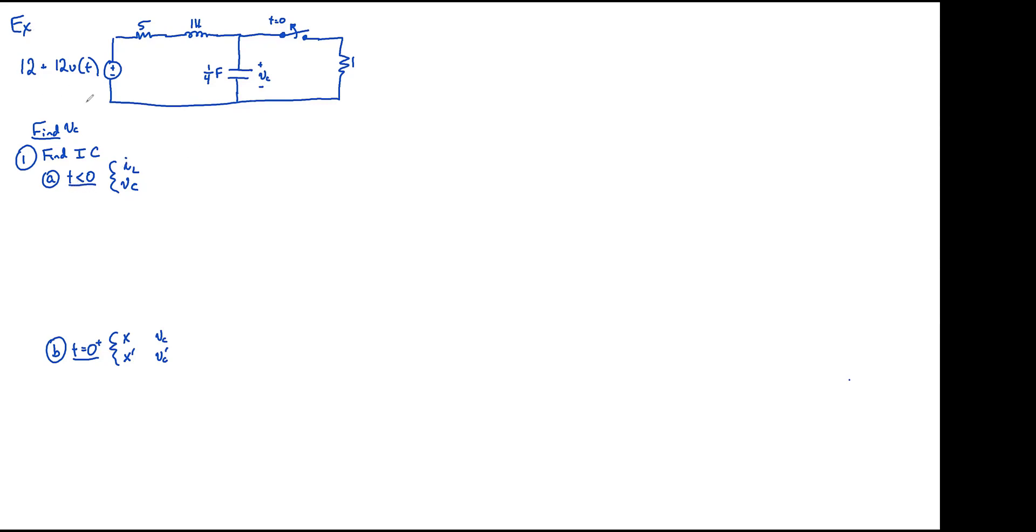So for T less than zero, what does this input look like? It will be just 12 volts. So your 12 U of T will go to way to zero and you'll end up having a 12 volt source. Got a 5 ohm resistor. The 5 ohm resistor and the inductor will be a short because you're in DC steady state. Time less than zero, nothing's happening. The switch will be closed, so a short. The capacitor will be an open because DC steady state. And the resistor will stay.